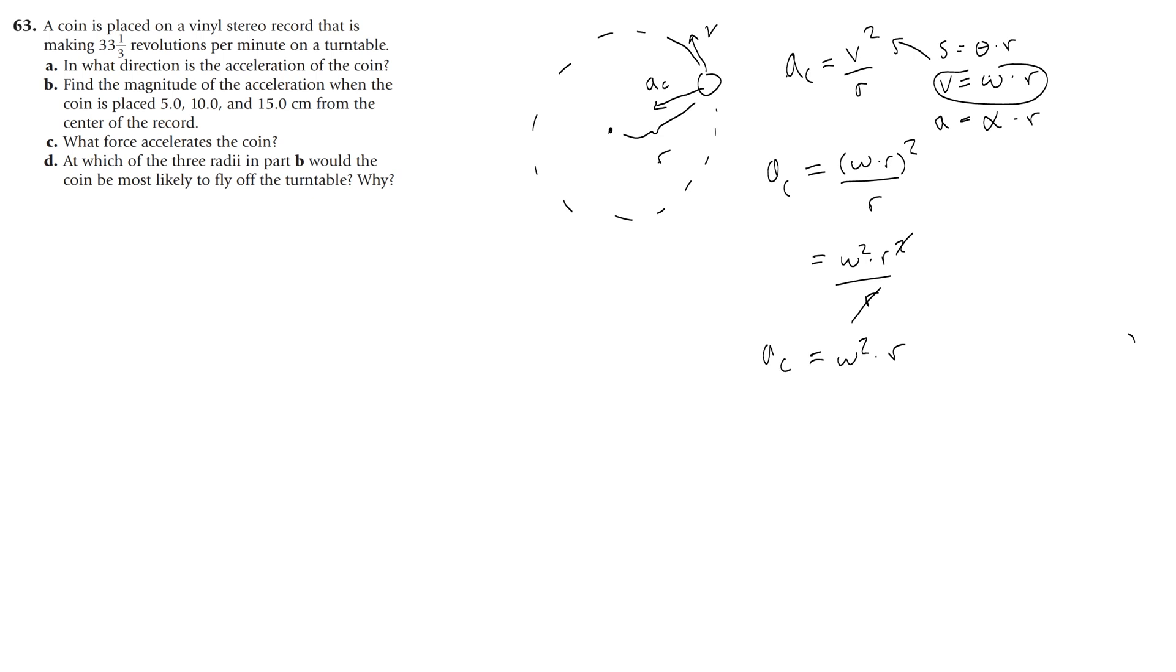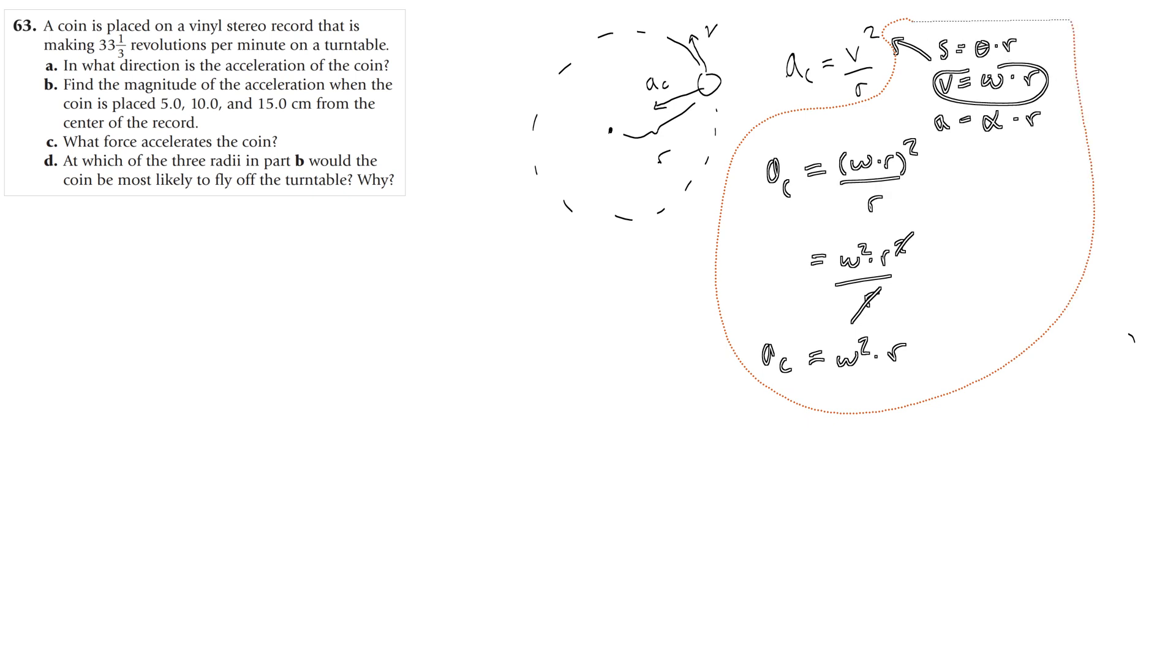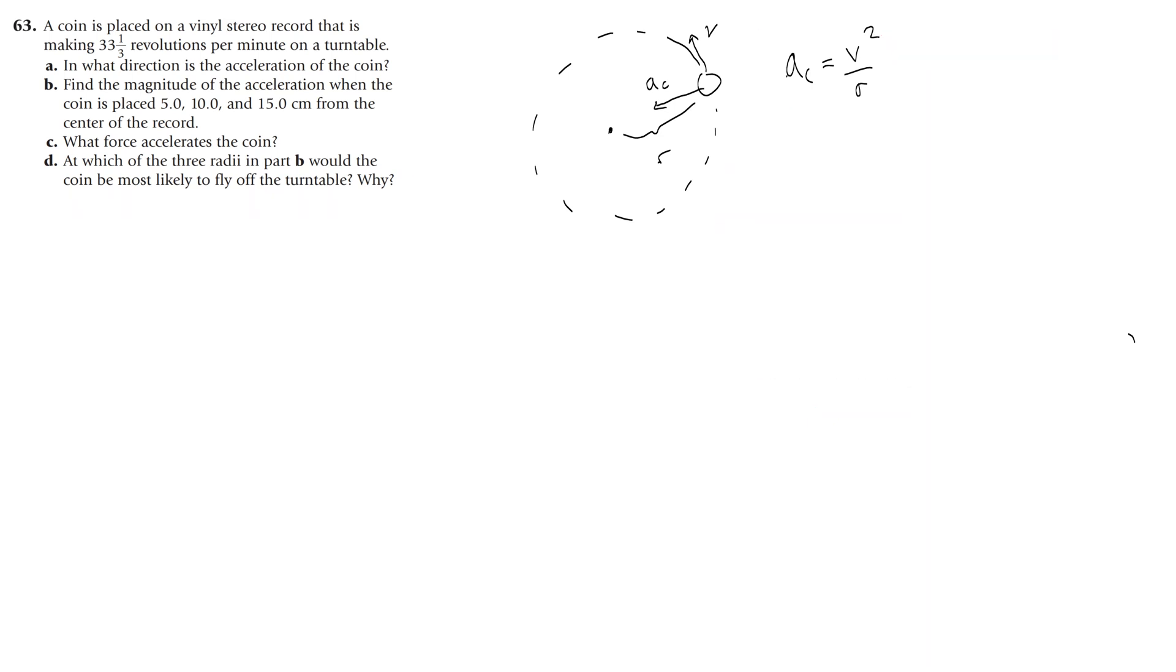This was from the rotational motion unit where you might have forgotten this, so in any case we have two equations for centripetal acceleration. One is V squared over R, and the other is omega squared times R. Either of those will give you the centripetal acceleration. To find the centripetal force, you just do the mass times the centripetal acceleration, and you can use either of those equations to get that.